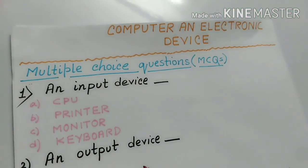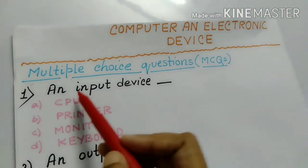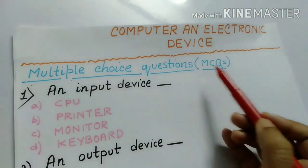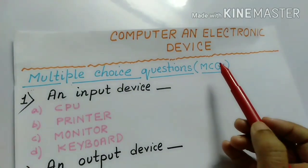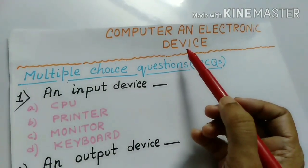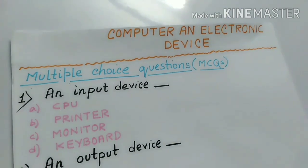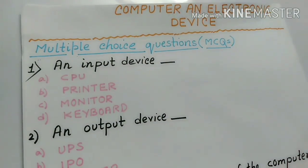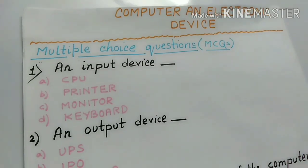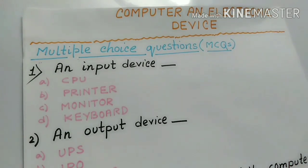So children, today we will do multiple choice questions or you can say MCQs from chapter 1, Computer and Electronic Device. We have already finished this chapter. We have already done the objective question answers from your book. Today we will do this work in the copy.